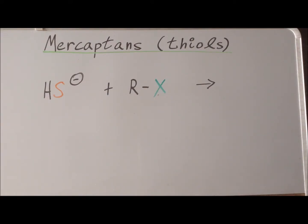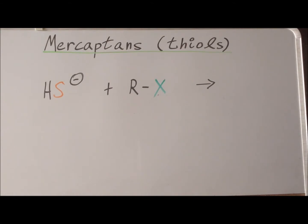We can synthesize thiols by a process analogous to the synthesis of alcohols by using the correct nucleophile. Instead of using the hydroxide ion, for the thiols we use the sulfhydryl, the bisulfide ion, or hydrogen sulfide, depending upon how you want to call it. Again, it's going to involve a nucleophilic attack on a chloro or haloalkane.